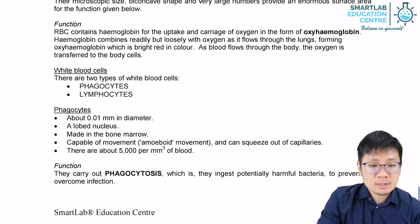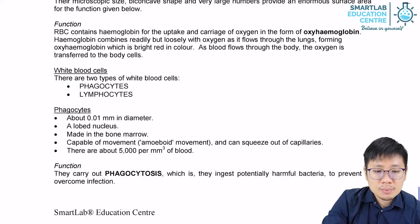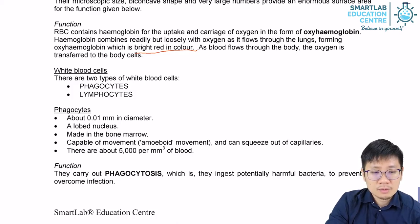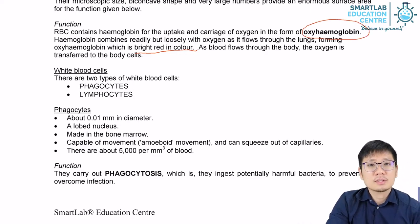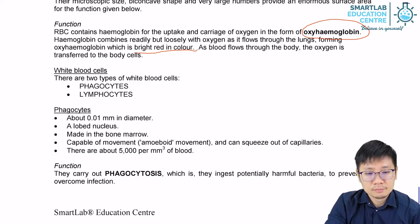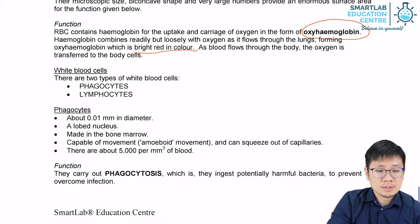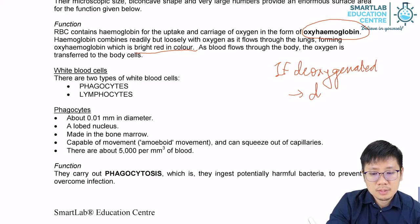When red blood cells containing hemoglobin absorb oxygen, they turn a bright red colour. This bright red colour can be used as a rough guide to how much oxygen is in the blood. When hemoglobin binds to oxygen, it is sometimes called oxyhemoglobin. If the red blood cells lose the oxygen and become deoxygenated, the red blood cells will turn a dark red.